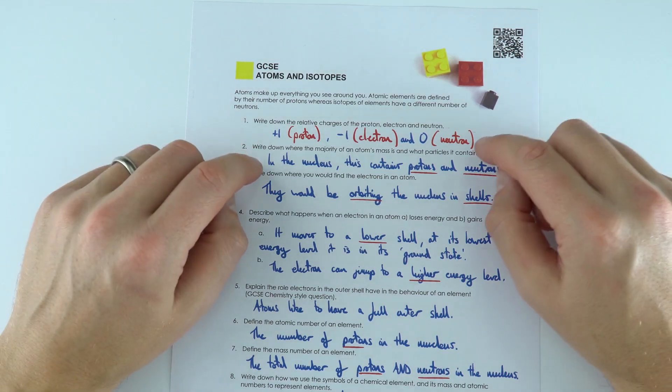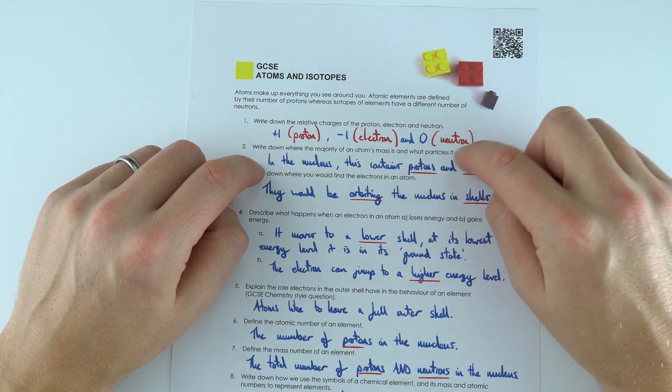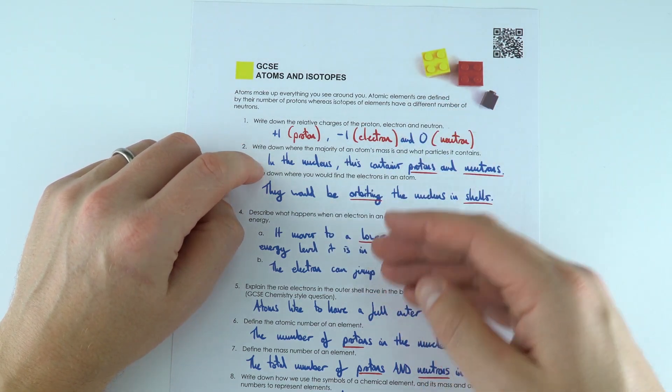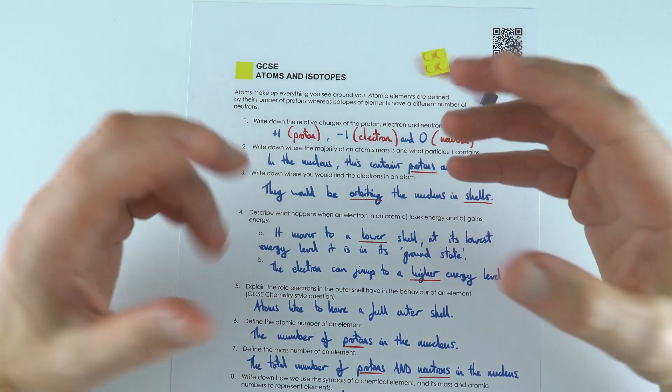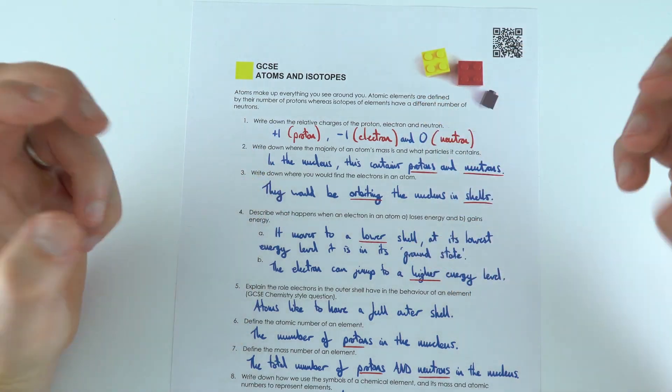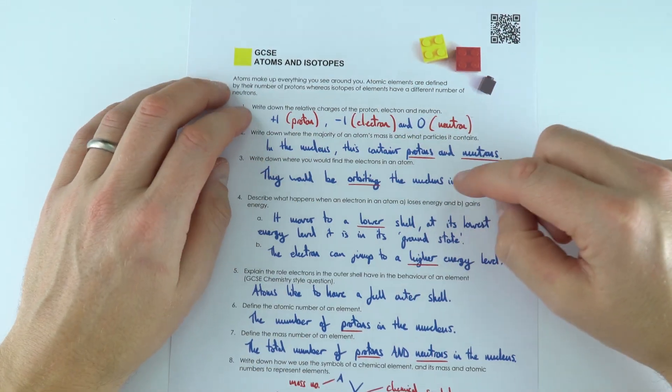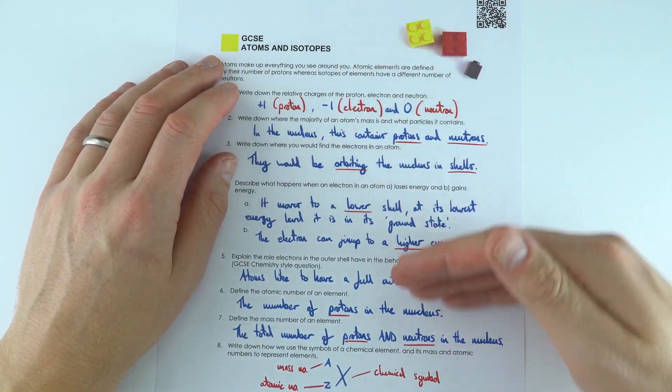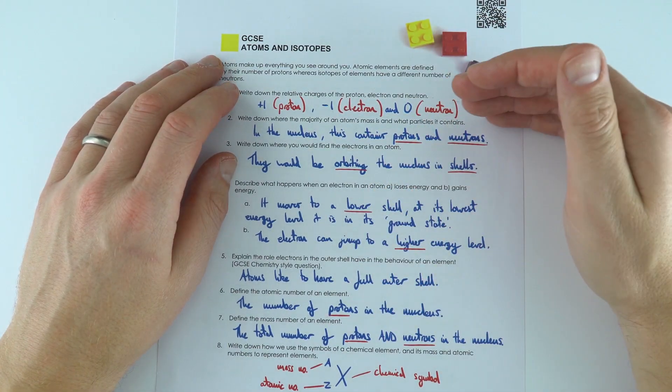Inside the atom we've got the nucleus which has the protons and neutrons in it, and orbiting around this we have the electrons in different shells. But sometimes if you energise that atom we can actually get the electrons to change the shells or the energy levels that they're in.